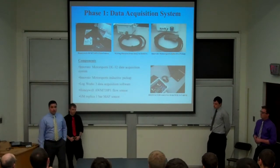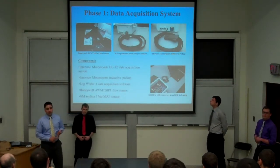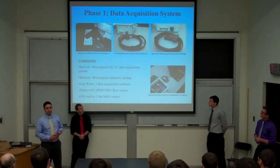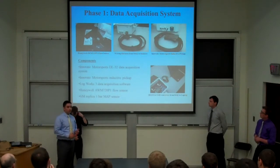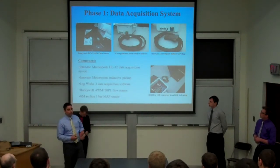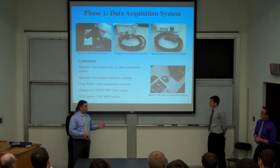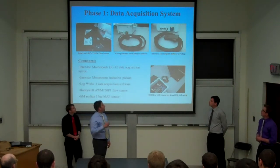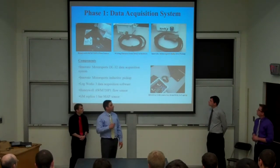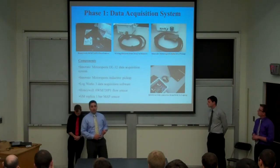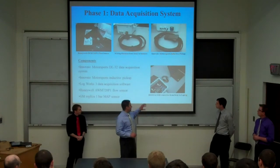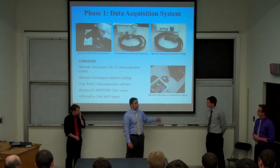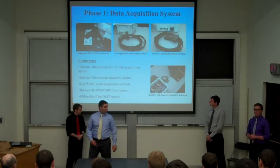Part of phase one is building our data acquisition system. We needed to be able to measure the PCV airflow rate, so we got our Honeywell airflow sensor, which allows us to measure zero to seven CFM of flow. We also needed pressure sensors, so we used general GM one-bar MAP sensors. All of those sensors were connected to our data acquisition system by means of a wiring harness. We also had an inductive RPM pickup, which allowed us to relate airflow back to a given engine load. All that sensor data comes into our Innovate DL32 data acquisition system, connected to our laptop for graphical analysis.